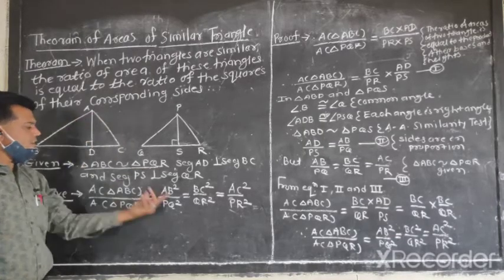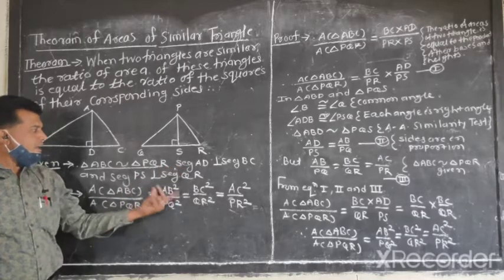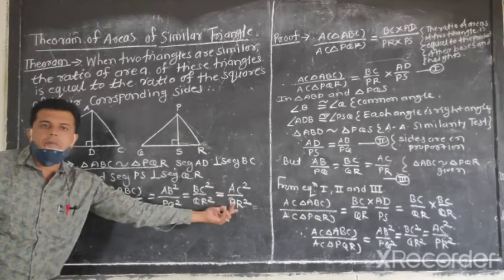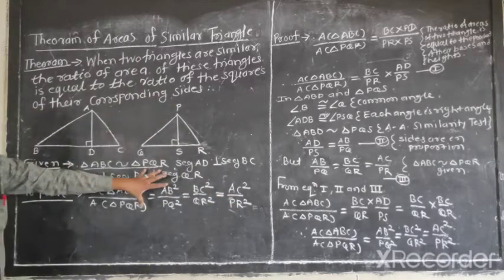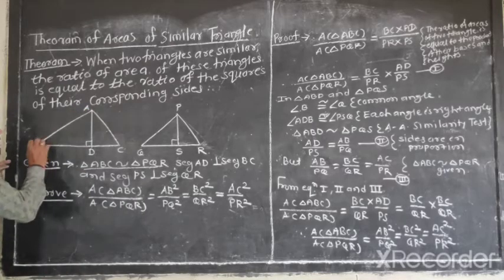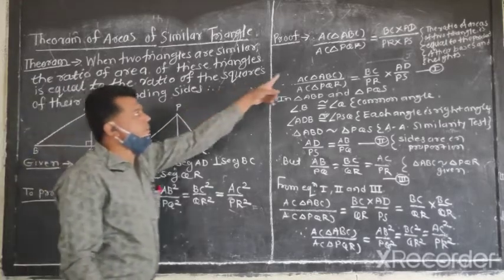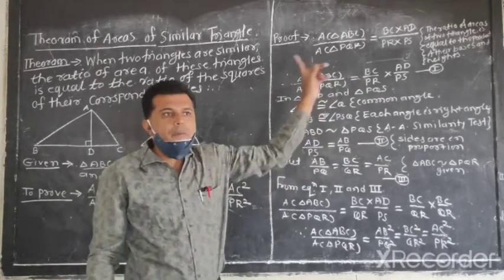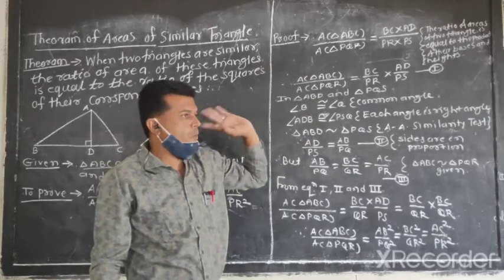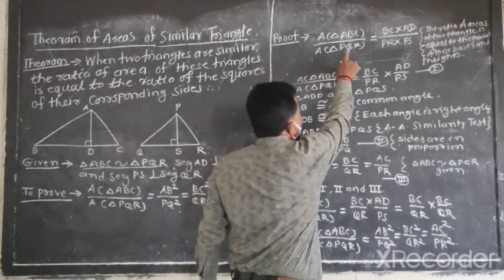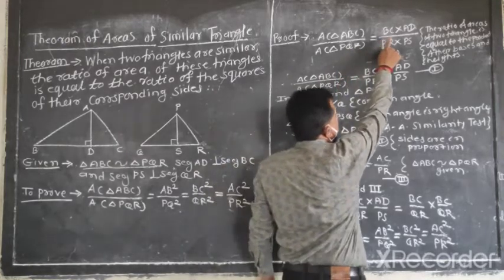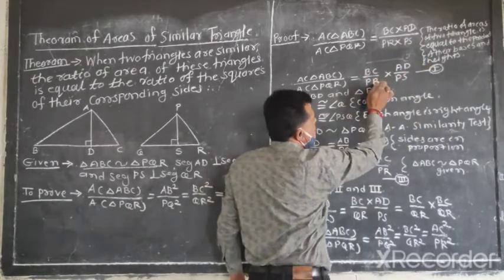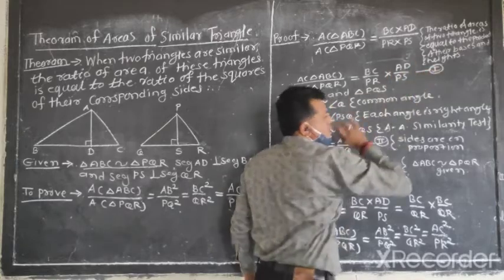AB square divided by PQ square and corresponding side and BC square divided by QR square is equal to AC square divided by PR square is equal to the product of their basis and corresponding side is equal to BCP square. This is equation number 1.